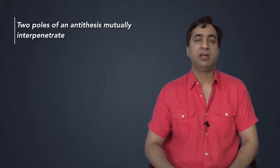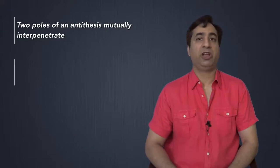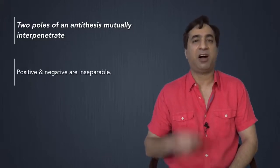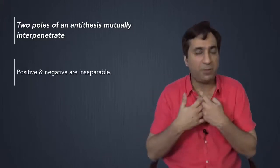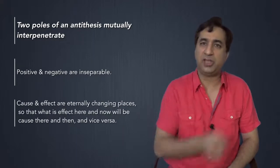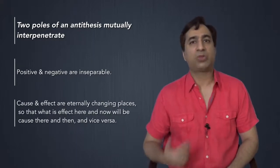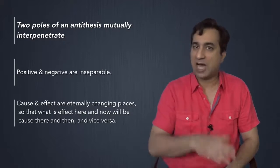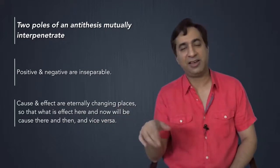And that's what Engels means when he says two poles of an antithesis, mutually interpenetrate. Positive and negative are, he says, inseparable. Cause and effect are eternally changing places. So that what is effect here and now will be cause there and then and vice versa. So cause and effect are constantly acting on each other. What is the cause here may become the effect there and what is the effect here may become the cause of the original cause even. And that is dialectics. How things impact each other.